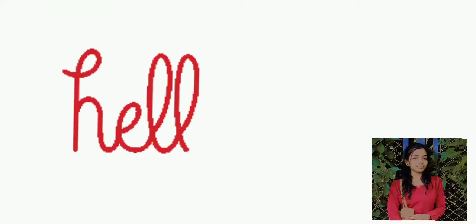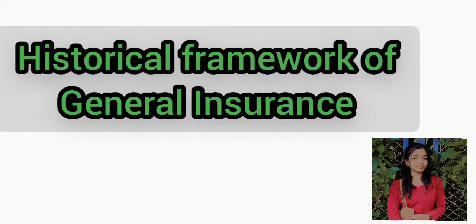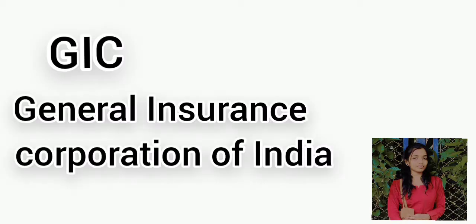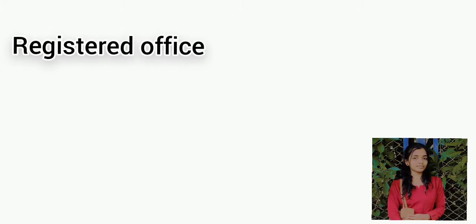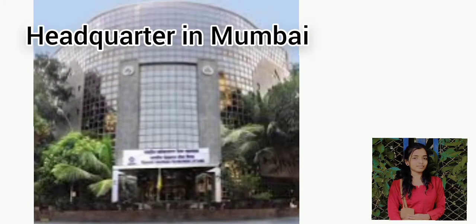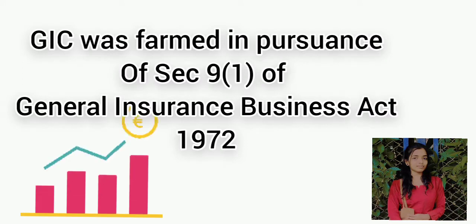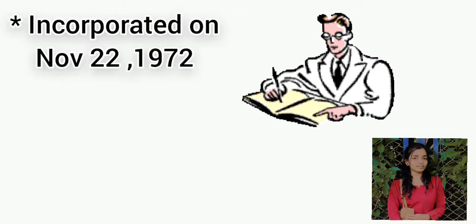Hello everyone, today we will study the historical framework of general insurance. GIC, that is General Insurance Corporation of India, has its registered office and headquarter in Mumbai. GIC was framed in pursuance of Section 9, Subsection 1 of the General Insurance Business Act 1972, and incorporated on November 22, 1972.